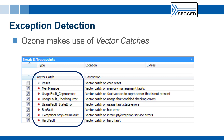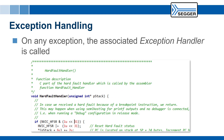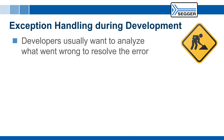In Ozone, vector catches can be enabled or disabled in the breakpoints window. On any exception, the exception handler as read from the vector table is called, just like it is done on interrupts. Exception handling is usually done differently during development and in production firmware. When errors happen during firmware development, developers usually want to analyze what went wrong to resolve the error.